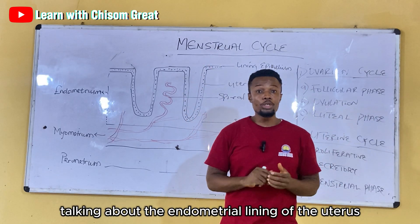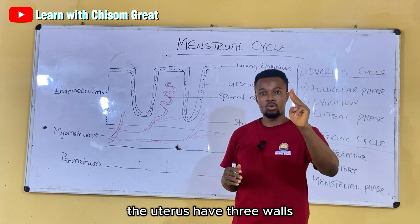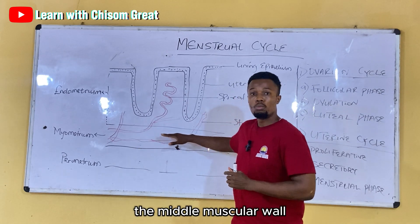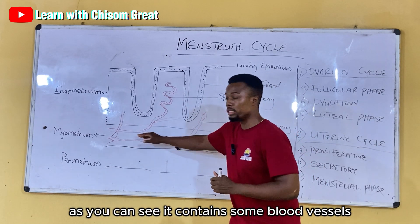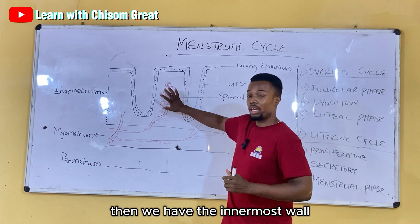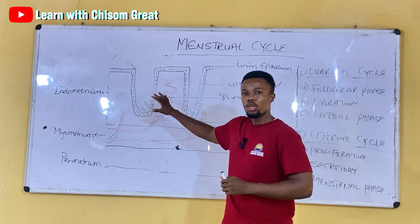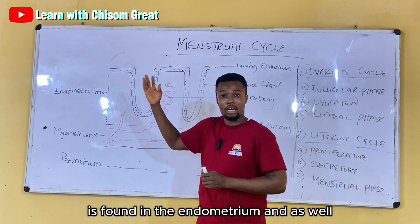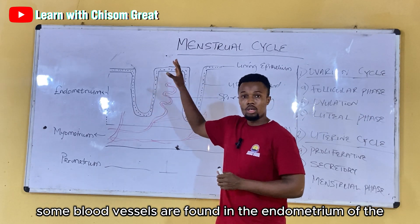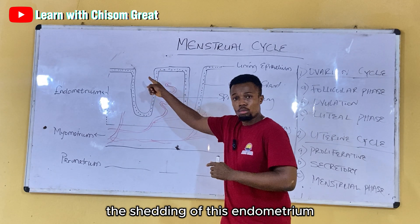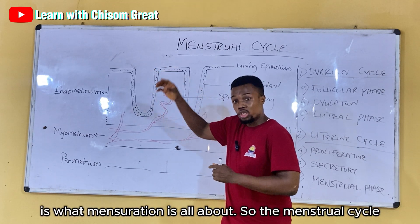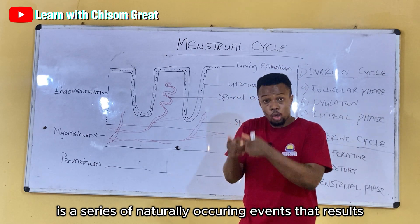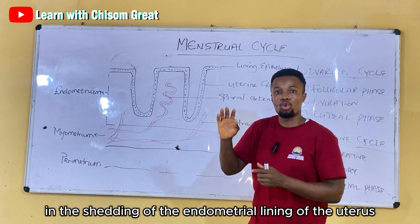Talking about the endometrial lining of the uterus, the uterus has three layers: the outermost layer, which is the perimetrium; the middle muscular layer, which is the myometrium, and you can see it contains some blood vessels; and the endometrial layer, which is the endometrium. The upper lining and the uterine glands are found in the endometrium, as well as some blood vessels. The shedding of this endometrium is what menstruation is all about.